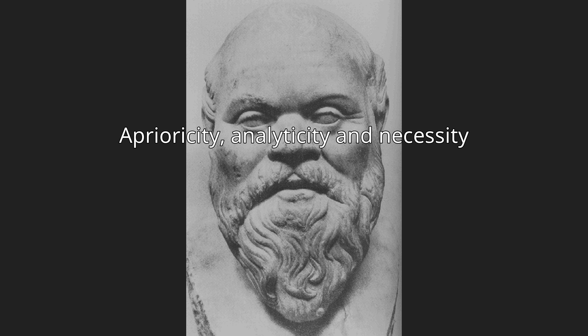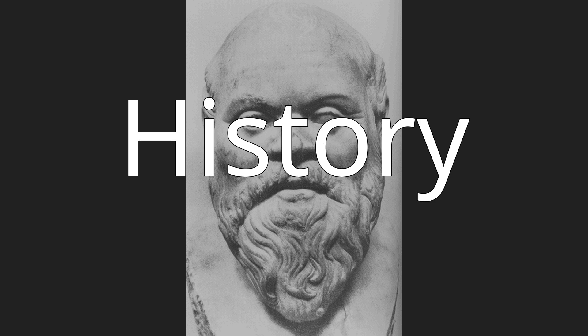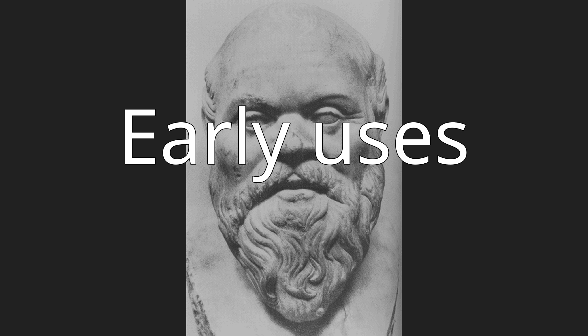The term a priori is Latin for 'from what comes before,' or less literally, 'from first principles before experience.' In contrast, the term a posteriori is Latin for 'from what comes later' or 'after experience.' They appear in Latin translations of Euclid's Elements, a work widely considered during the early European modern period as the model for precise thinking. An early philosophical use of what might be considered a notion of a priori knowledge, though not called by that name, is Plato's theory of recollection, related in the dialogue Meno, according to which something like a priori knowledge is knowledge inherent, intrinsic, in the human mind.